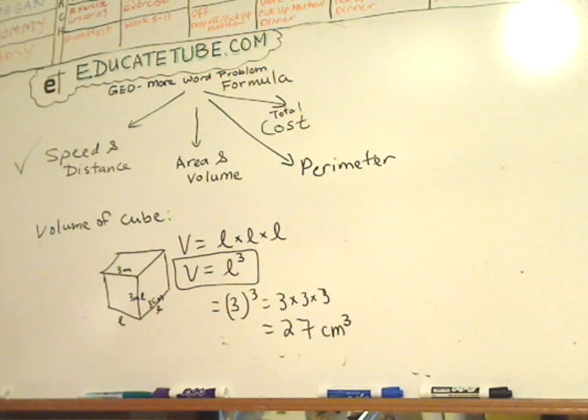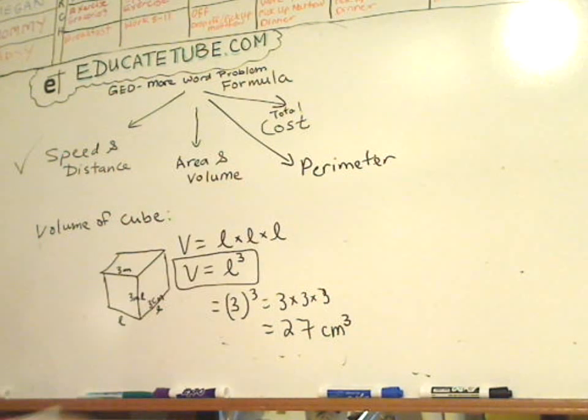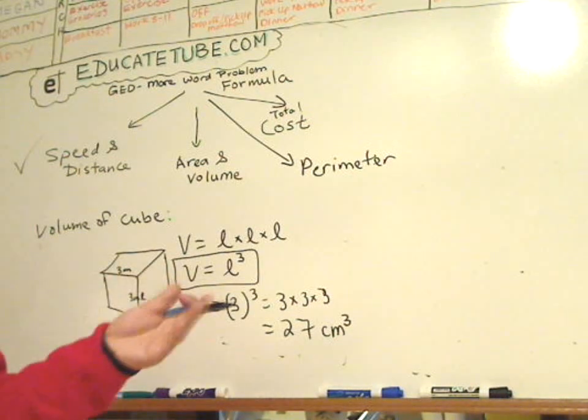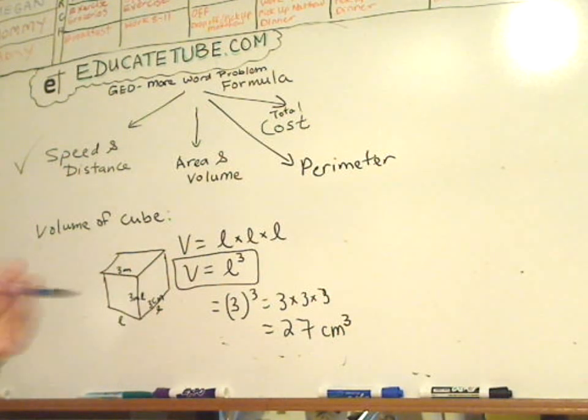When it's volume, it's always cubed. When it's area, it's always squared. When it's perimeter, it is always in a single unit, like centimeter or meter.